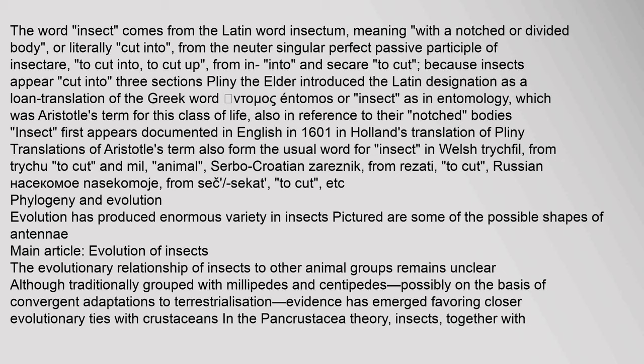Translations of Aristotle's term also form the usual word for insect in Welsh (Trichvill, from trichu 'to cut' and mill 'animal'), Serbo-Croatian (Zareznik, from Rezati 'to cut'), and Russian (Nasekomoye, from Sakat 'to cut'), etc.